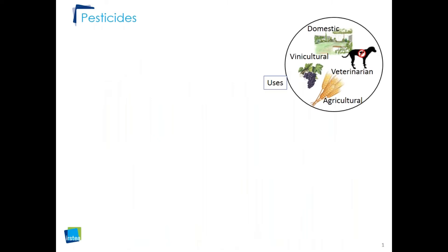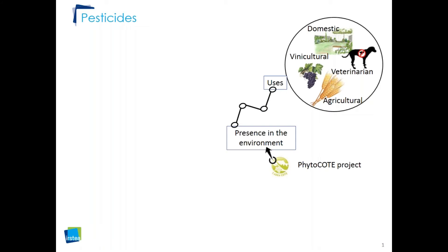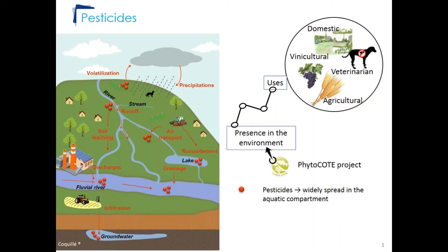Pesticides have many uses including domestic, viticultural, veterinarian, and agricultural. Her thesis was involved in the SECRE project, which aims to make the link between pesticide uses and their presence in the environment. We know that pesticides are well detected in the aquatic environment. They can join the atmospheric compartment by volatilization, then the terrestrial compartment after deposition, and then the aquatic compartment after leaching or runoff processes.